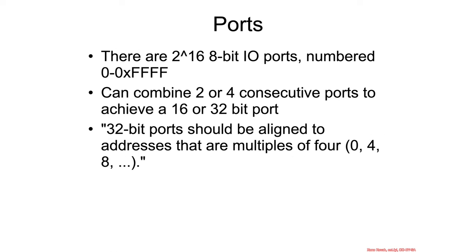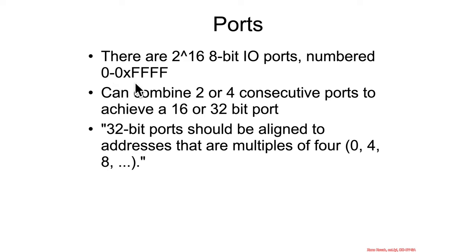There are 2 to the 16 possible 8-bit I/O ports on the system, with port 0 through port FFFF. If you want to access sizes larger than 8 bits at a time, the hardware needs to support accessing 2- or 4-byte granularity via a port that takes up consecutive ports. So if port 0 had a 4-byte access capability, ports 0, 1, 2, and 3 would all be accessed at the same time when reading from port 0, and the next available port would be port 4.